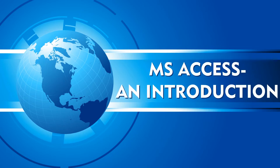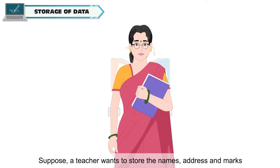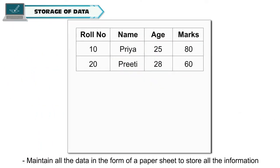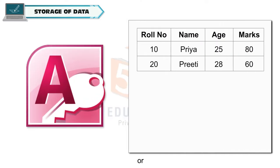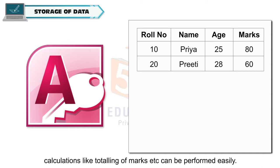MS Access – An Introduction. Suppose a teacher wants to store the names, addresses and marks of the students of a class. There are two options to do this: maintain all the data in the form of a paper sheet, or use software that stores data in such a way that it can be retrieved, updated, and calculations like totaling of marks can be performed easily.